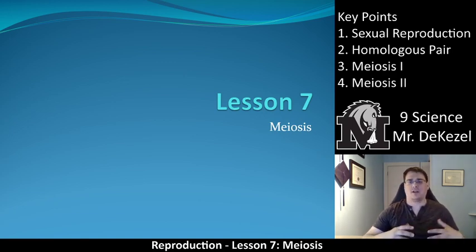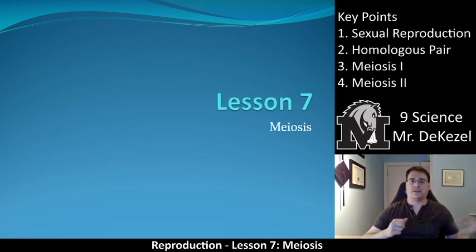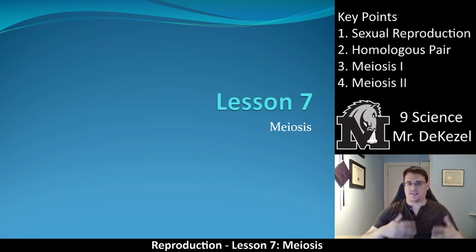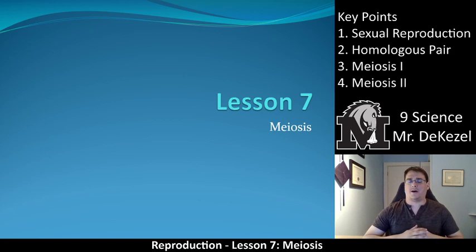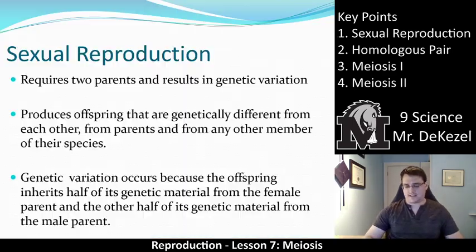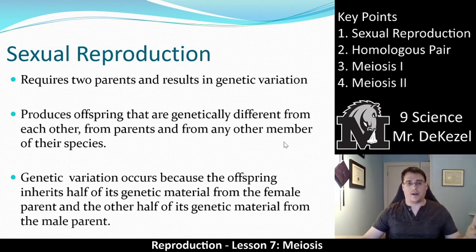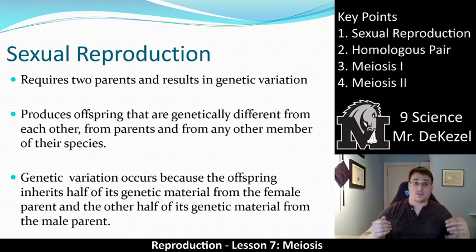We have been talking about asexual reproduction and mitosis and the different advantages and disadvantages of that. We'll be moving into sexual reproduction, the advantages and disadvantages, the process, and all that stuff. So sexual reproduction requires two parents, and it results in genetic variation. That's why you don't look exactly like your mom or your dad.